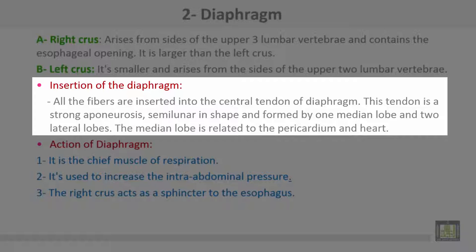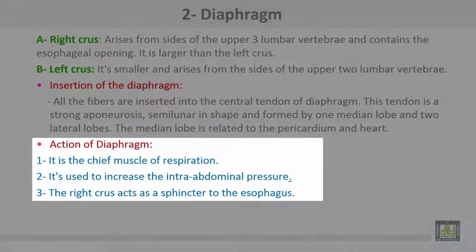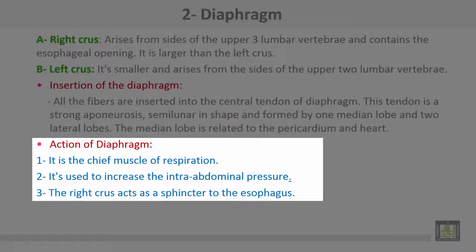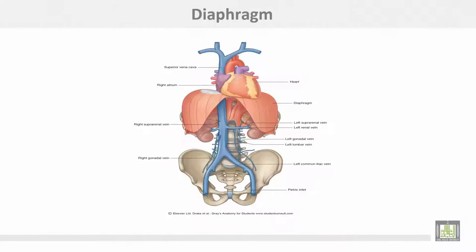Insertion of the diaphragm: all fibers are inserted into the central tendon, which is a strong aponeurosis, semilunar in shape, formed by one median loop and two lateral loops. The median loop is related to the pericardium and heart. Action of the diaphragm: it is the chief muscle of respiration, it increases intra-abdominal pressure, and the right crus acts as a sphincter to the esophagus.